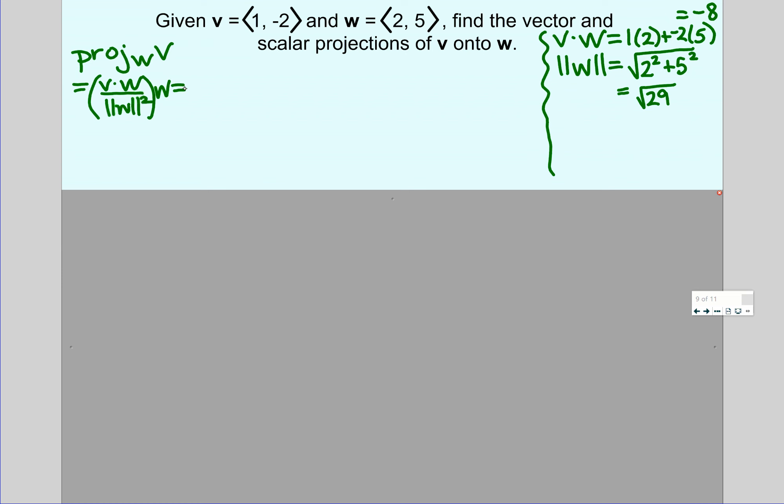Formula for the projection is dot product divided by magnitude of W squared times vector W. Filling up what we just found, dot product is negative 8. The magnitude of W is rad 29, but when we square it, it's just going to be a 29. And we are multiplying that through vector W, 2, 5. Distribute. You end up with negative 16, 29ths, and negative 40, 29ths. That is the vector projection. That's the shadow that's formed.